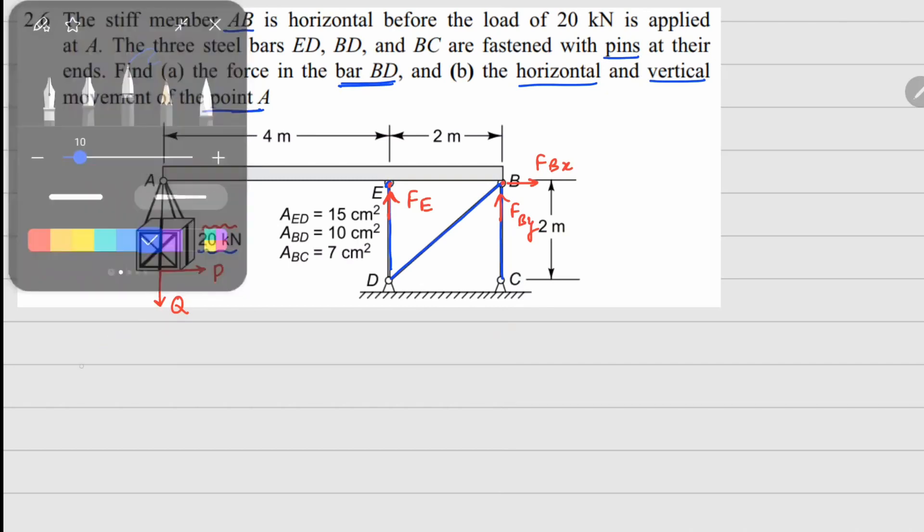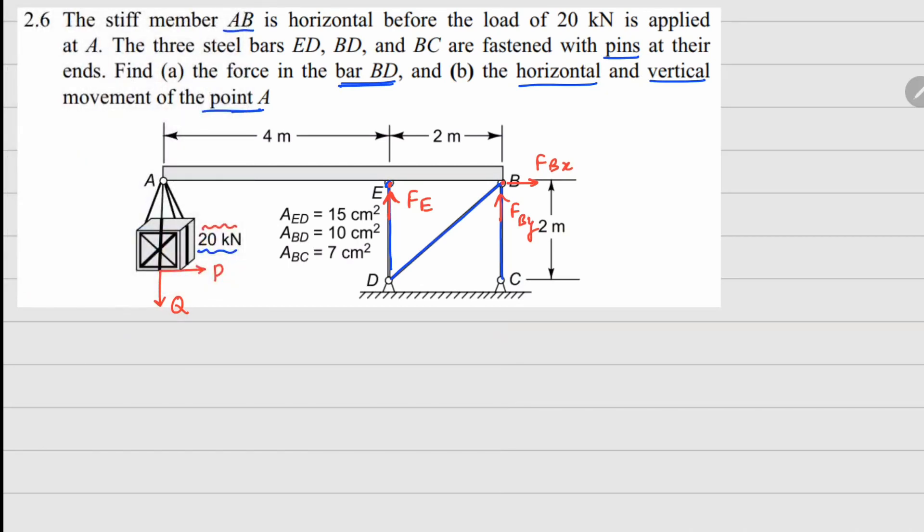Now we can do the force and moment balance for member AB. X force balance gives us FBx plus P equals 0. Y force balance gives us Fe plus FBy, both of these balance your Q force. If I take a moment about point A, then 4 times Fe plus 6 times FBy equals 0.